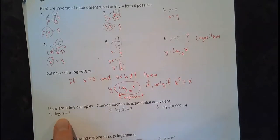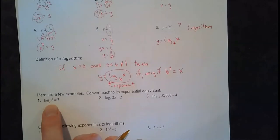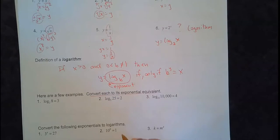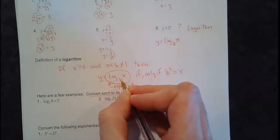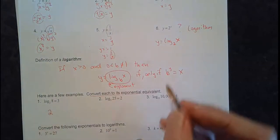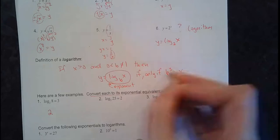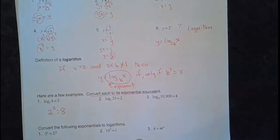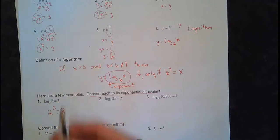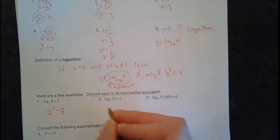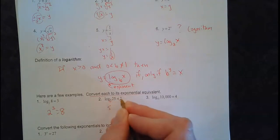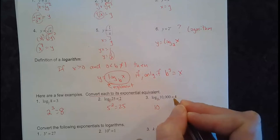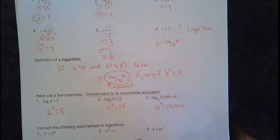Here are a few examples - these are already done, they're true statements. Log base 2 of 8 equals 3. We convert to the exponential equivalent: the base is 2, the exponent is 3, and the argument is 8. It's true that 2 to the 3rd equals 8. So log base 2 of 8 equals 3 because 2 to the 3rd equals 8. Over here, the base is 5, the log equals 2 (that's the exponent), the argument is 25. Here the base is 10, the exponent is 4, and that equals 10,000. That's a true statement.